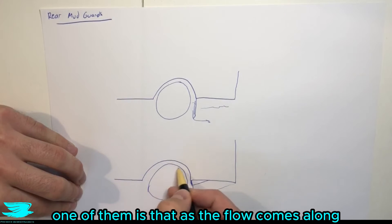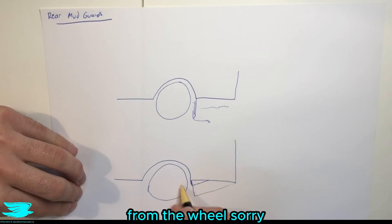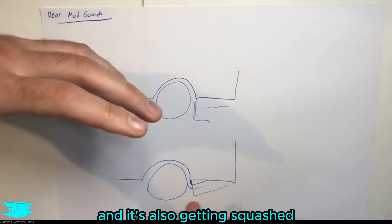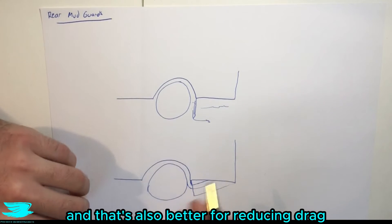One of them is that as the flow comes along, obviously you have the wake from the car, from the wheel sorry, and then that has to funnel down and then it comes along here and it sort of gets squashed. So you're funneling into a smaller space and that's also better for reducing the drag.